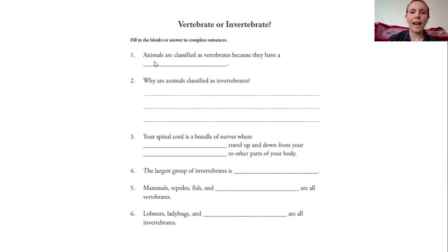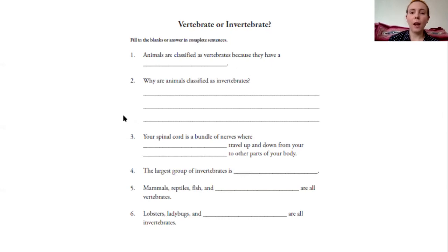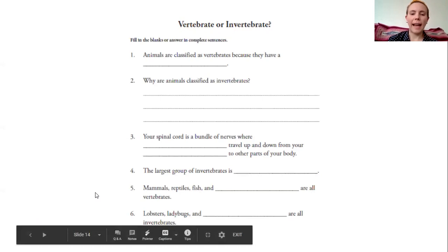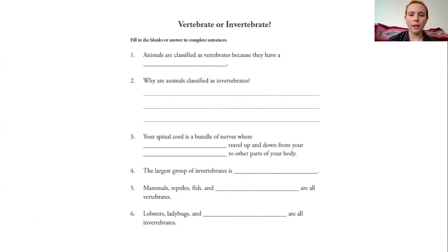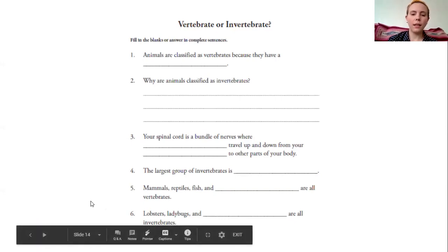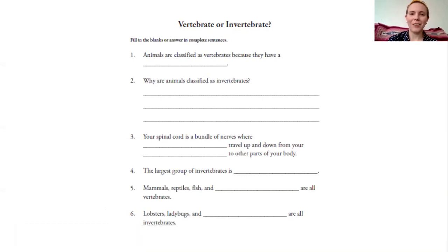Question one: animals are classified as vertebrates because they have a blank. Question two: why are animals classified as invertebrates? Remember when you're writing a sentence you need a capital letter at the beginning and punctuation at the end. Question three: your spinal cord is a bundle of nerves where blank travels up and down from your blank to other parts of your body — you might need to find text evidence for that one. Question four: the largest group of invertebrates is blank. Question five: mammals, reptiles, fish, and blank are all vertebrates. Question six: lobsters, ladybugs, and blank are all invertebrates. There could be more than one right answer for some of these questions.